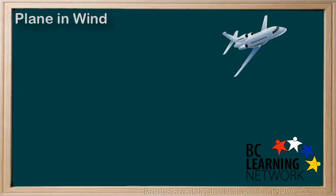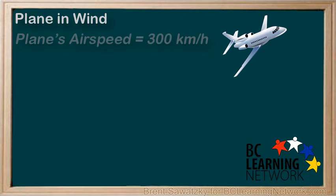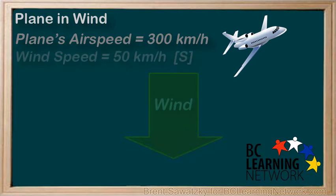Let's consider an airplane flying in the wind. The airplane has an airspeed of 300 kilometers per hour — that is, it can fly 300 kilometers per hour in still air. The average wind is going south at 50 kilometers per hour.